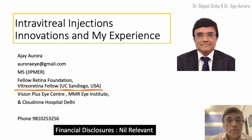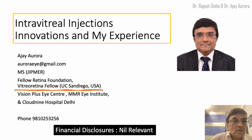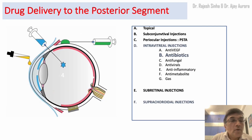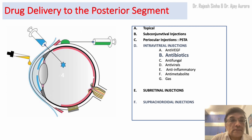Hello, I am Dr. Ajay Rora and today we will be discussing the safe and effective ways of giving intravitreal injections easily. The drugs can be given to the posterior segment by topical drops, by subconjunctival injections, intravitreal injections, subretinal injections, and suprachoroidal injections. What we will be discussing today will be the way we give intravitreal injections.